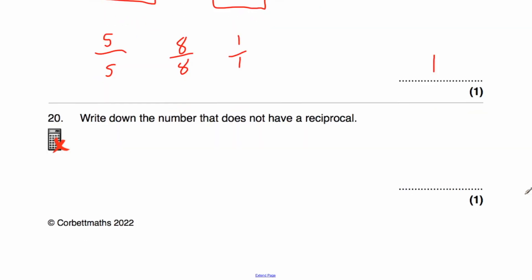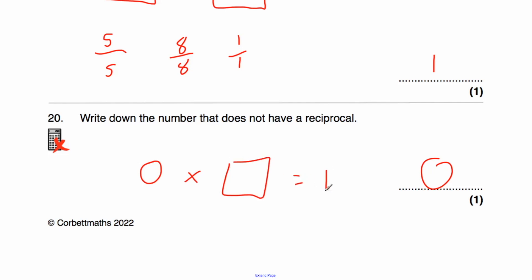Question 20: write down the number that does not have a reciprocal. That's going to be 0, because a number times its reciprocal gives 1, and there's no number you can multiply 0 by to get 1.